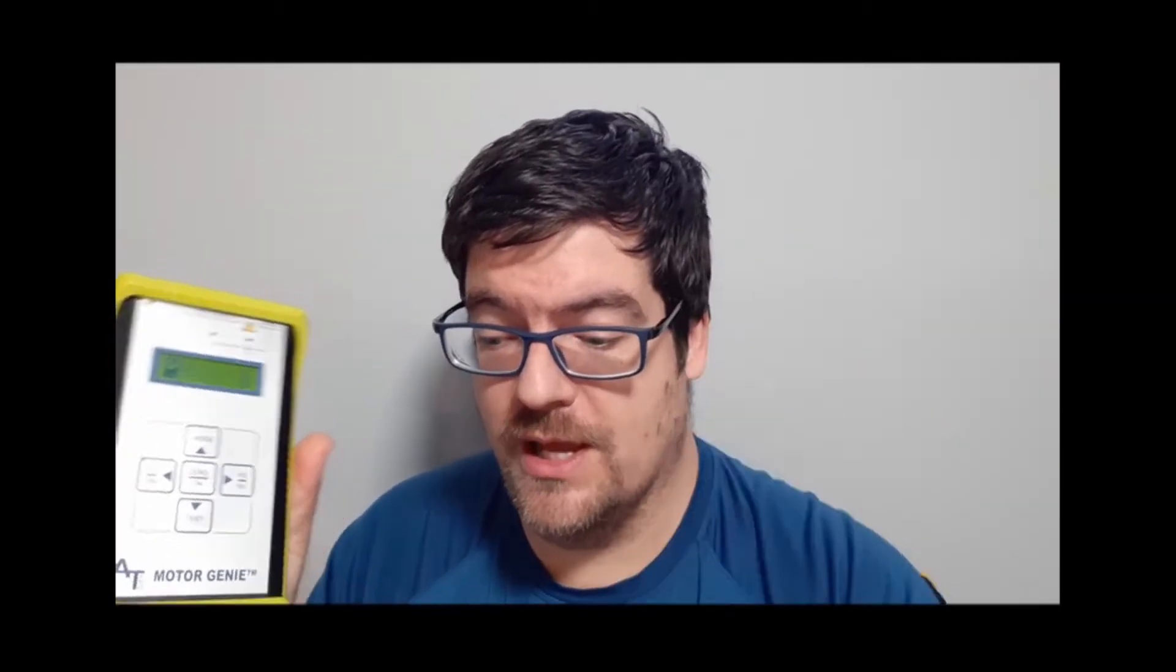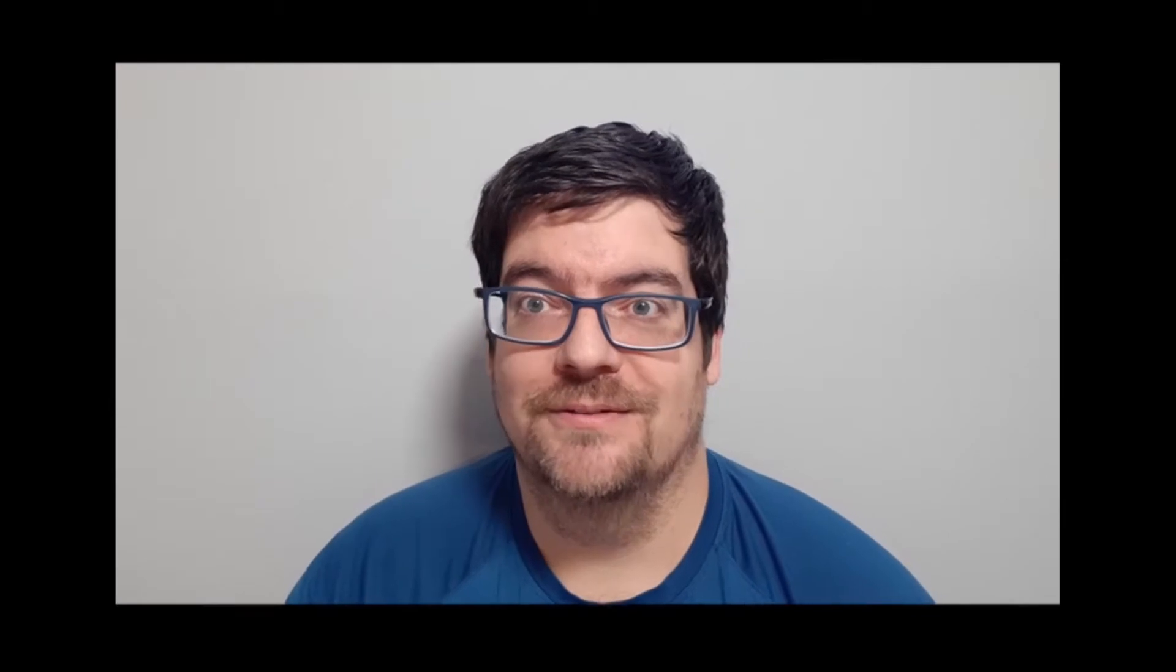Basically what we're going to do is we're just going to go through some tests on a motor. We're going to input the numbers that we get from the tester into the Motor Genie app and we'll get a report. I'll show you how you can save your report, it's that easy.